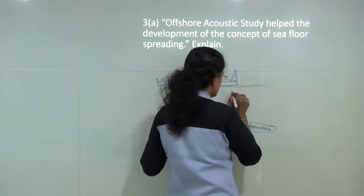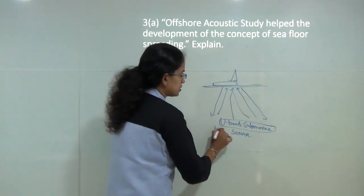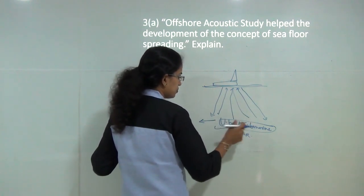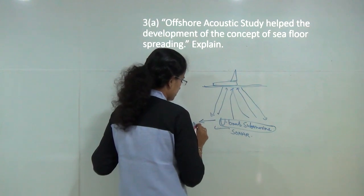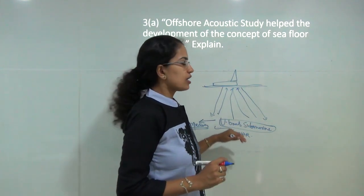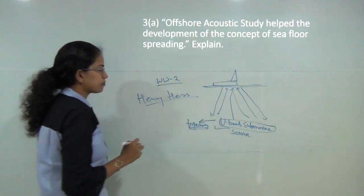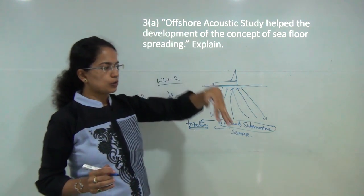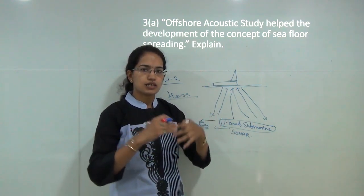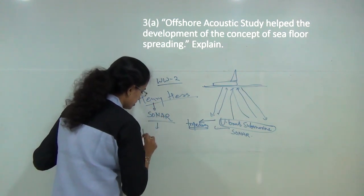Sound waves from sonar hit the American boats and reflected back, giving U-boats the positions of American vessels and enabling them to destroy the boats using torpedoes. This idea was later used by Henry Hess when he proposed sea floor spreading — if sound waves reflect from a certain point, there is a structure present there. Using sonar, he was the first to discover the Mid-Atlantic Ridge.